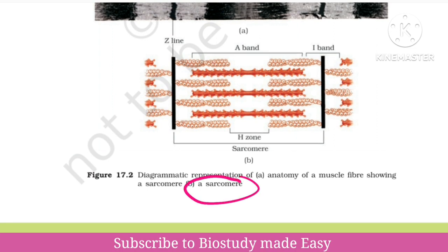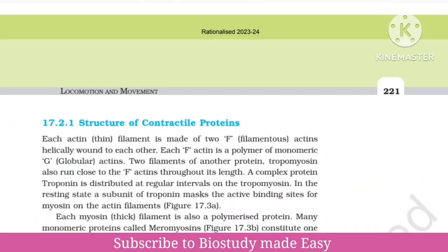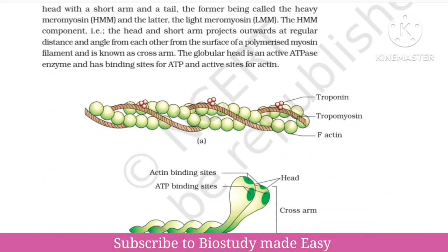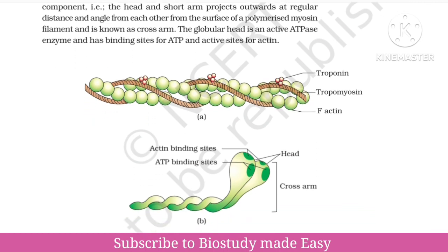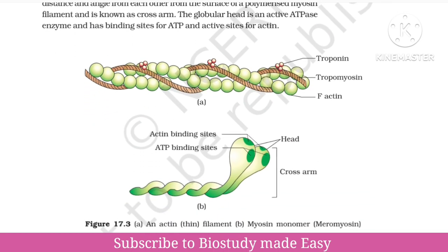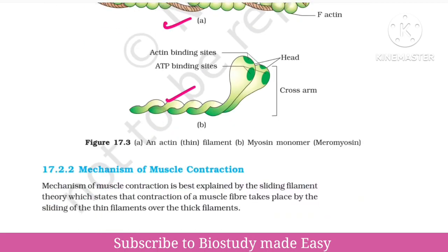There are different types of muscles. The structural unit of muscle is called Sarcomere. It contains proteins — two types of proteins: actin and myosin. These proteins are very important.